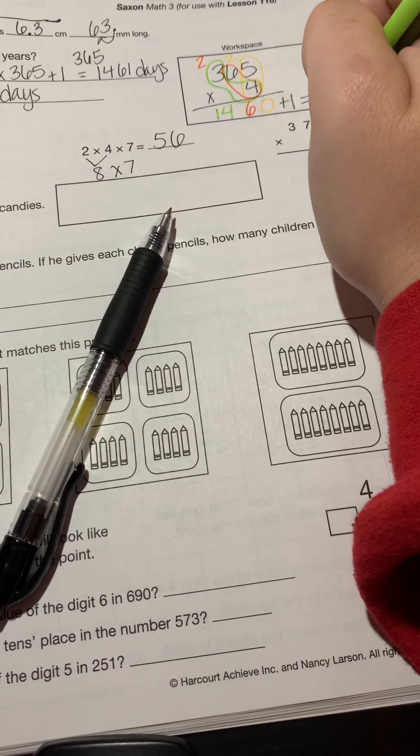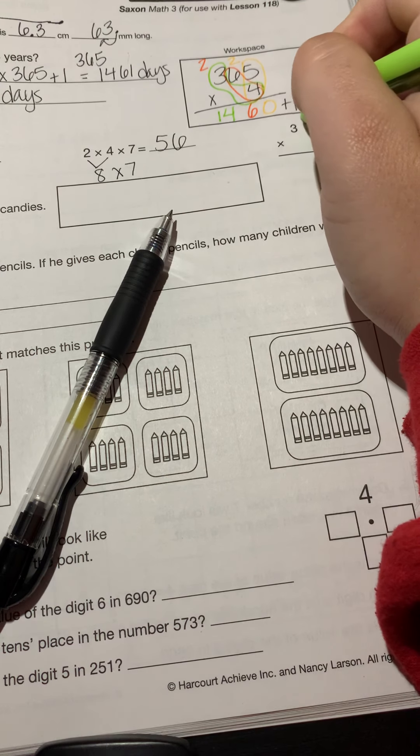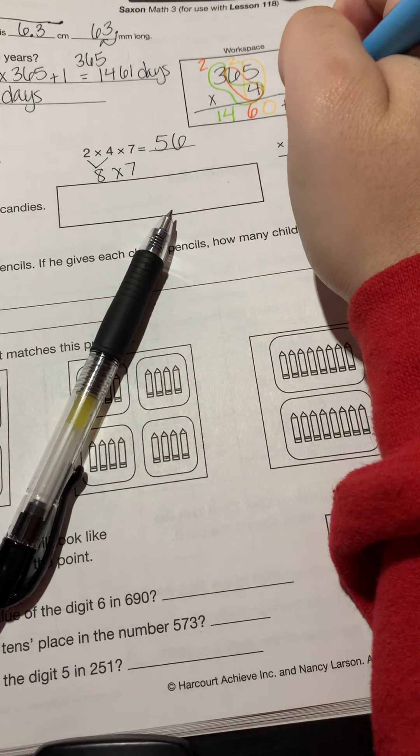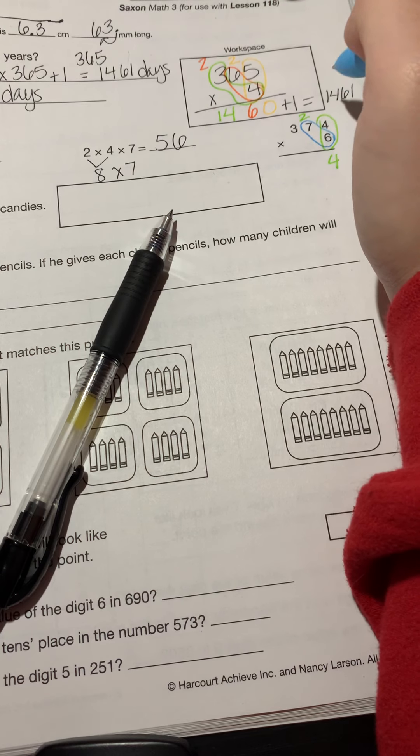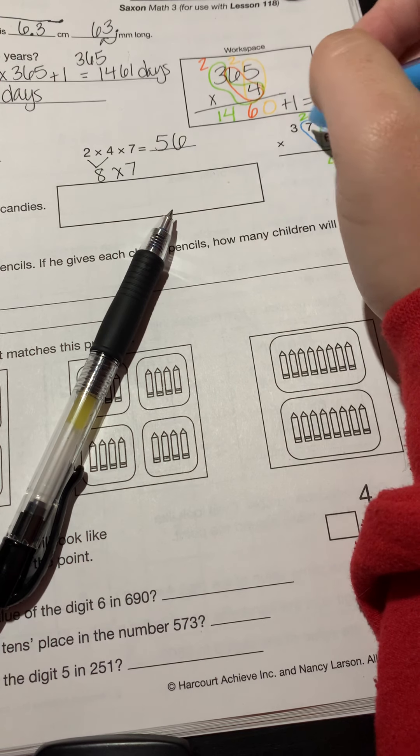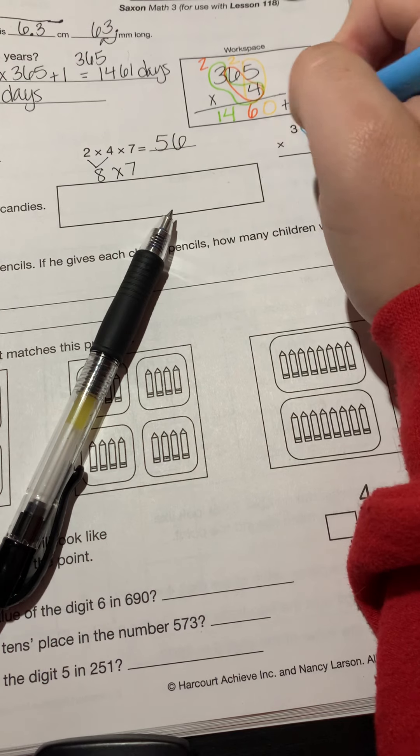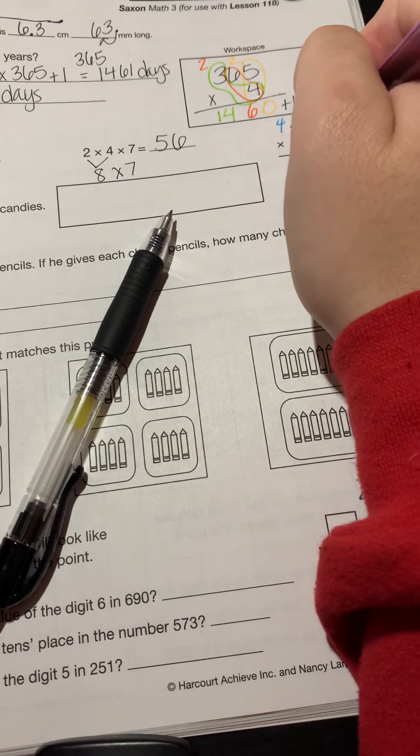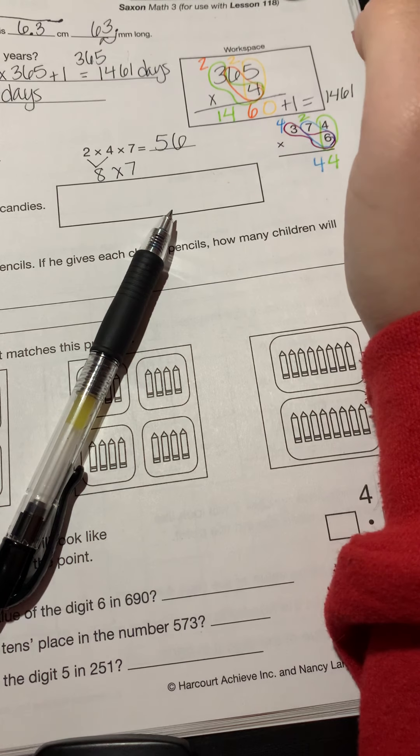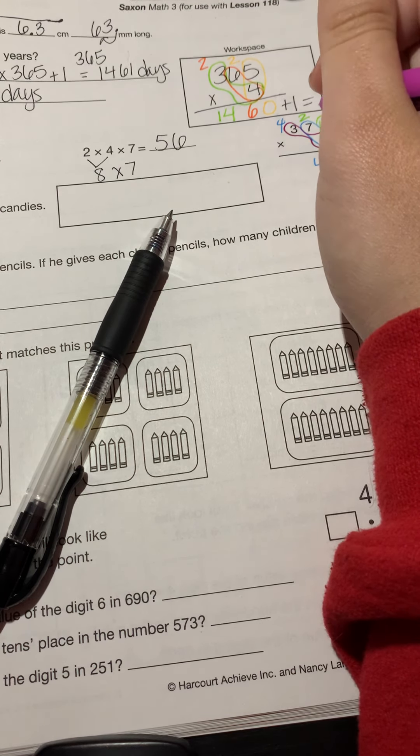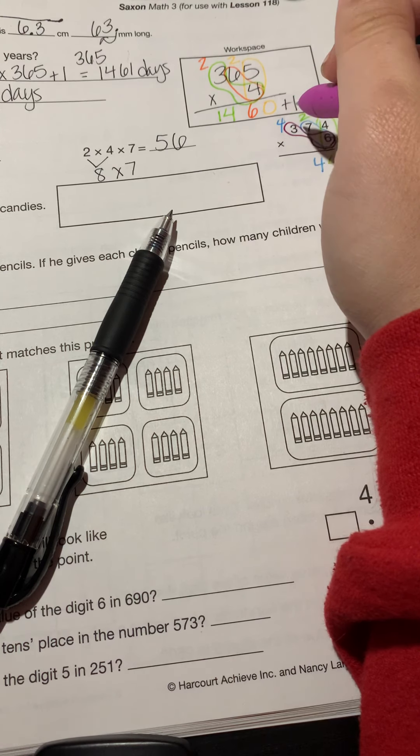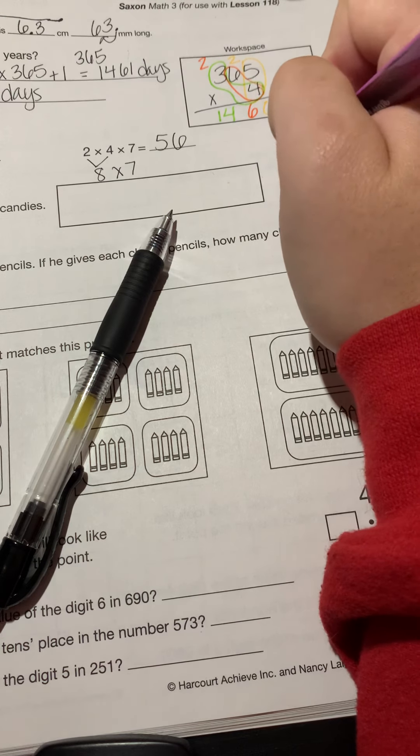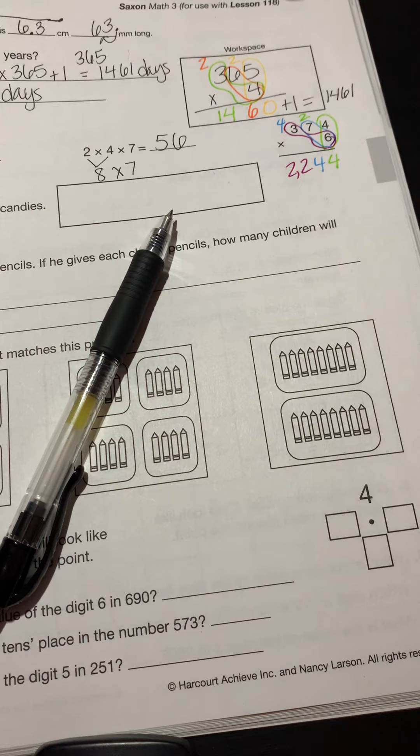With this being no exception, right? We know four times six, we just did this, is 24. Drop my four, carry my two. Six times seven now gives me, man, I've been saying this rhyme so much the past few days. Fell on my shoe, picked it up, it was 42 plus two more, 44. So drop my four, carry my other four. And then finally here, I'm going to do three times six. Three times six gives me 18 plus four more gives me 22. So my answer is 2244.